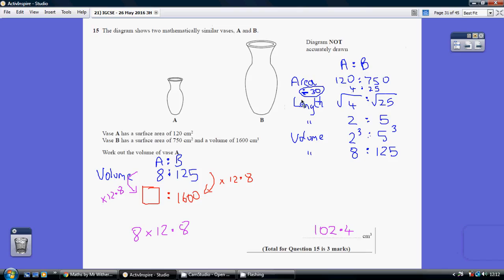Now, how do we go from area to length? We square root the area ratio. So, square root of 4 to the square root of 25. Our length ratio is 2 to 5.